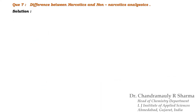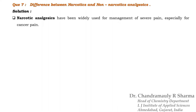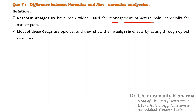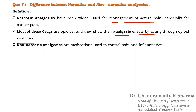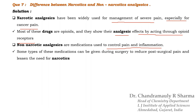The next question is the difference between narcotic and non-narcotic analgesics. As we all know, analgesics have two different types: narcotic and non-narcotic. Narcotic analgesics have been widely used for the management of severe pain, especially for cancer. Most of these drugs are opioids and they show their analgesic effect by acting through opioid receptors — they bind to the receptor. Non-narcotic analgesics are medications used to control pain and inflammation in the primary stage. Some of these medications can be given during surgery to reduce post-surgical pain and lessen the need for narcotics.